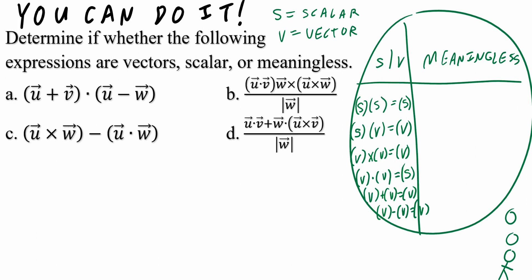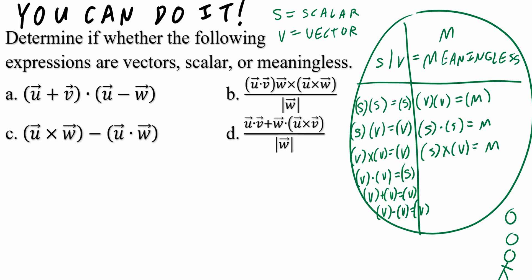Moving to the meaningless column — letting M equal meaningless. If you take a vector and simply multiply it by another vector (without dot or cross), that is meaningless. If you take a scalar and dot it to another scalar, that's also meaningless — you cannot say five dotted into five. The cross product of a scalar and a vector is meaningless, as is the cross product of two scalars — you cannot take five cross five, that has no meaning. Finally, the dot product between a scalar and a vector is also meaningless.